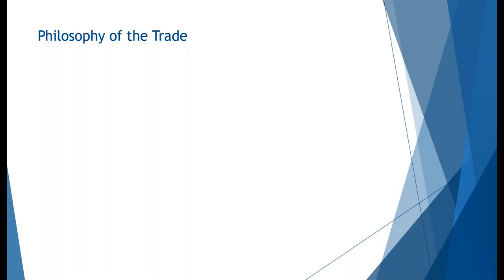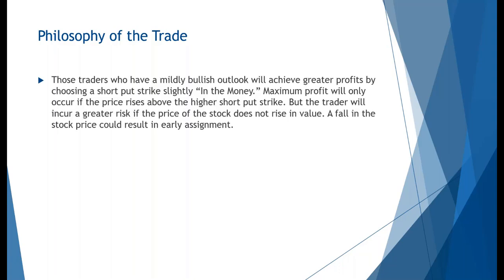Traders who are mildly or overly bullish will achieve greater profits by picking a first strike that is slightly in the money or very close to current price. Maximum profit only occurs if, at expiration, the stock price has gone above that strike price. However, this trader takes on greater risk because if the price does not get above that strike or falls, they could face early assignment — meaning the person who bought that put from us exercises it, making us take ownership of the stock.